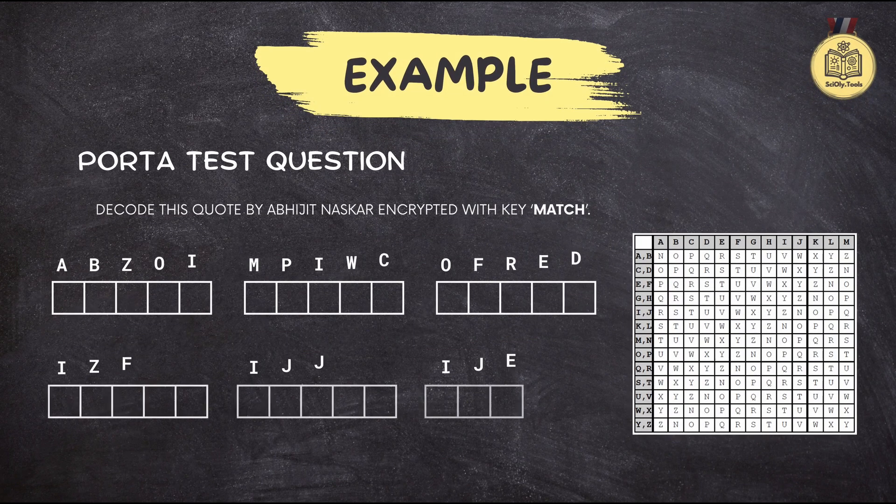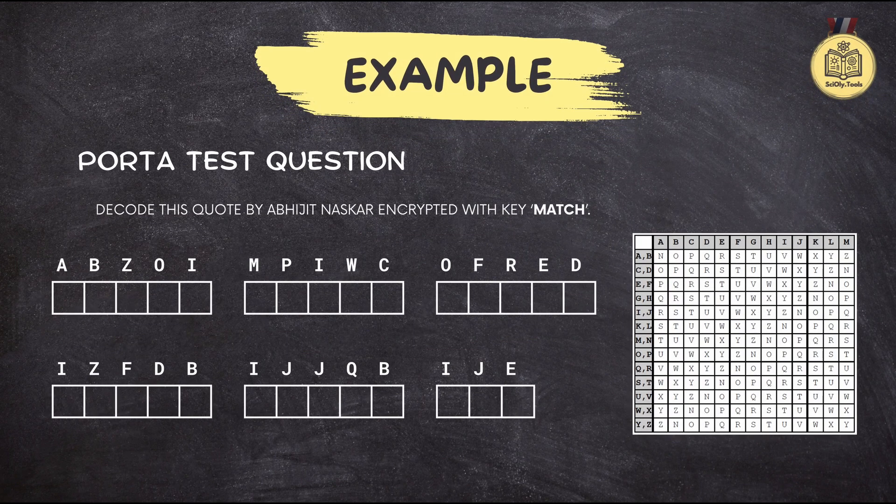All you need is the ciphertext, keyword, and the handy Porta Cipher table. We'll provide those, so no need to worry. The Porta Cipher table might look intimidating at first glance, but it's really just a grid of letters that helps us swap one letter for another based on our keyword.